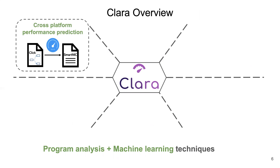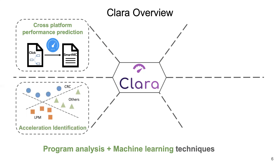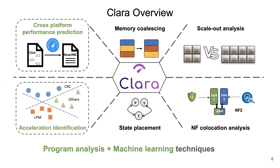Given a Click NF code block, the performance prediction module aims at predicting the corresponding number of SmartNIC instructions after the offloading process. Another type of insight we focus on is acceleration opportunity identification, which tries to identify NF code blocks that will be accelerated by SmartNIC accelerators. Apart from those two, CLARA could also leverage SmartNIC memory characteristics to do memory coalescing and state placement, thus reducing latency cost of memory accesses. Moreover, CLARA could also do scale-out analysis to predict the best number of cores to use, and NF collocation analysis to figure out which pairs of NFs result in less resource contention. Due to time constraints, we will not talk about them in detail.